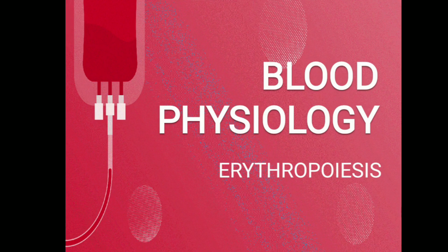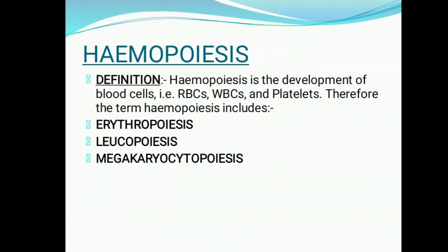Before entering into erythropoiesis, let us understand what hemopoiesis is. Hemopoiesis simply means the development of blood cells, including RBCs, WBCs, and platelets. Therefore, the term hemopoiesis includes erythropoiesis, which means development of RBCs; leukopoiesis, which means development of WBCs; and megakaryocytopoiesis, which means development of platelets.